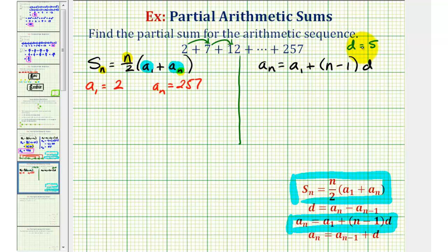If we weren't able to find this pattern by analyzing the series, we could use this formula here for d. d is equal to a sub n minus a sub n minus one, which means if we select any term in the series and subtract the previous term, this would give us our common difference d. Notice seven minus two is equal to five. Twelve minus seven is equal to five.